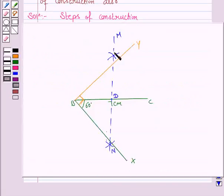So, MN is the perpendicular bisector of the line segment BC and it intersects BY at the point O and D is the point of bisection of BC.